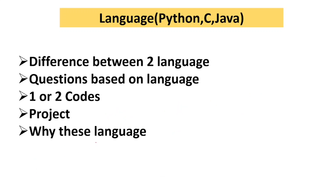They will ask why you chose this language. If you say Java, they will ask why not Python or C. You must have a proper answer. For Python, you can say it is a very easy language, it takes less space, and requires less code. You can also prepare C++ as an option. Make sure you are ready to justify your language choice.